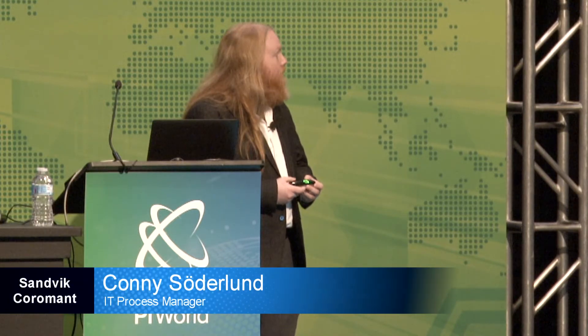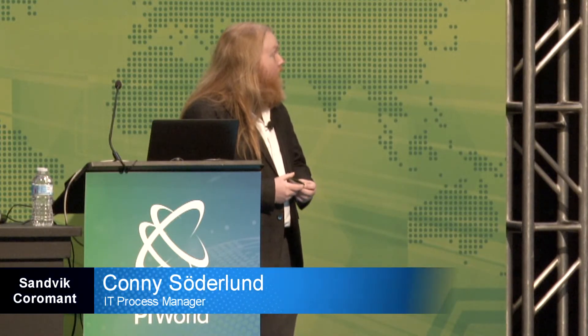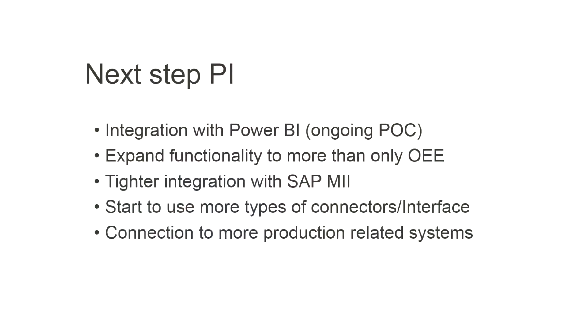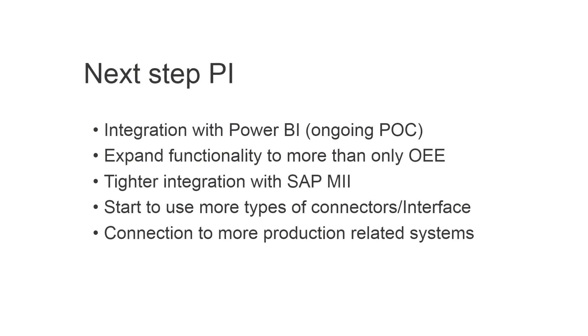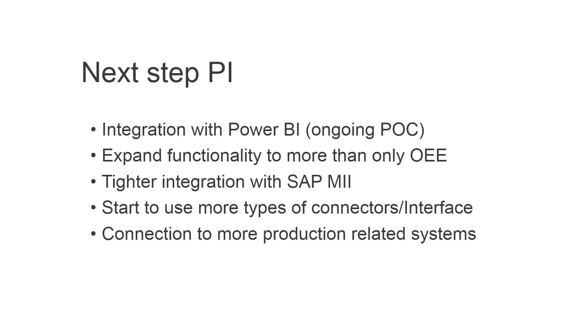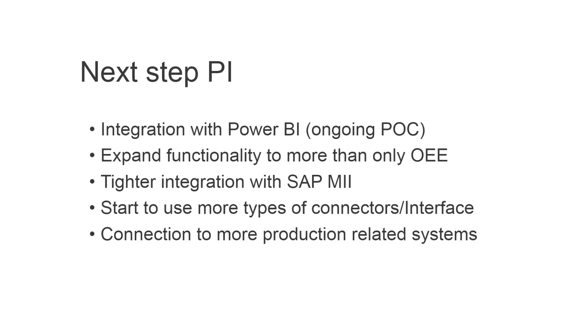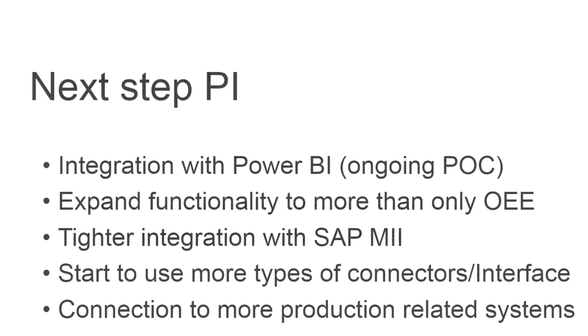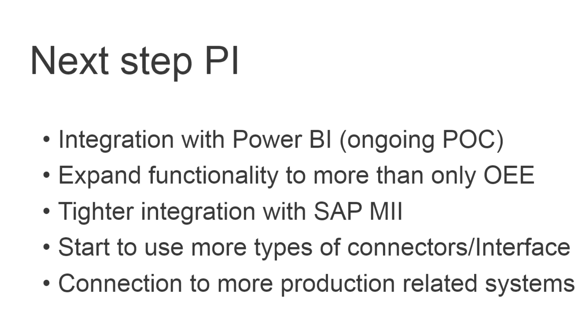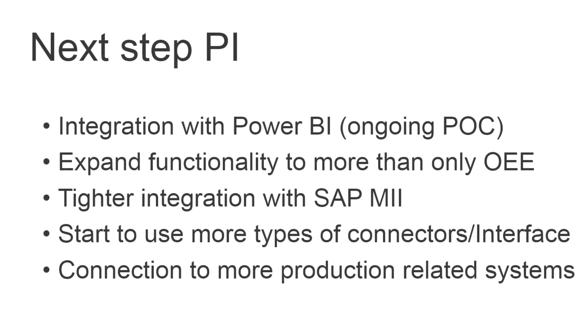The next step with Pi is Power BI integration with the integrator to expand more functionality. We want a tight integration with SAP MI and to use more connectors and interfaces, and we want a two-way connection to other production-related systems — for example, the DNC system and so on.